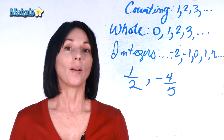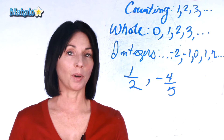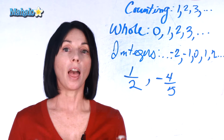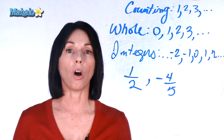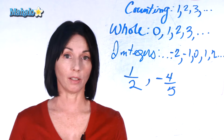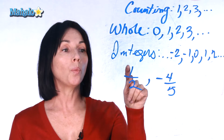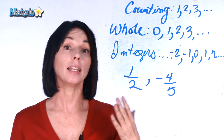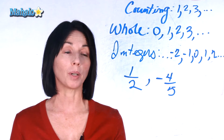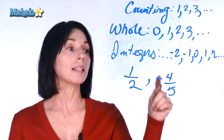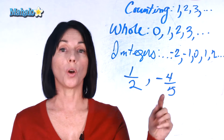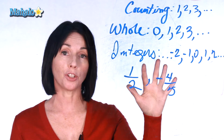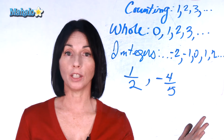Now, any time you can express a number as an integer over an integer, that number is called rational. So one over two, one half, is a rational number. So is negative four over five, because it's an integer over an integer.